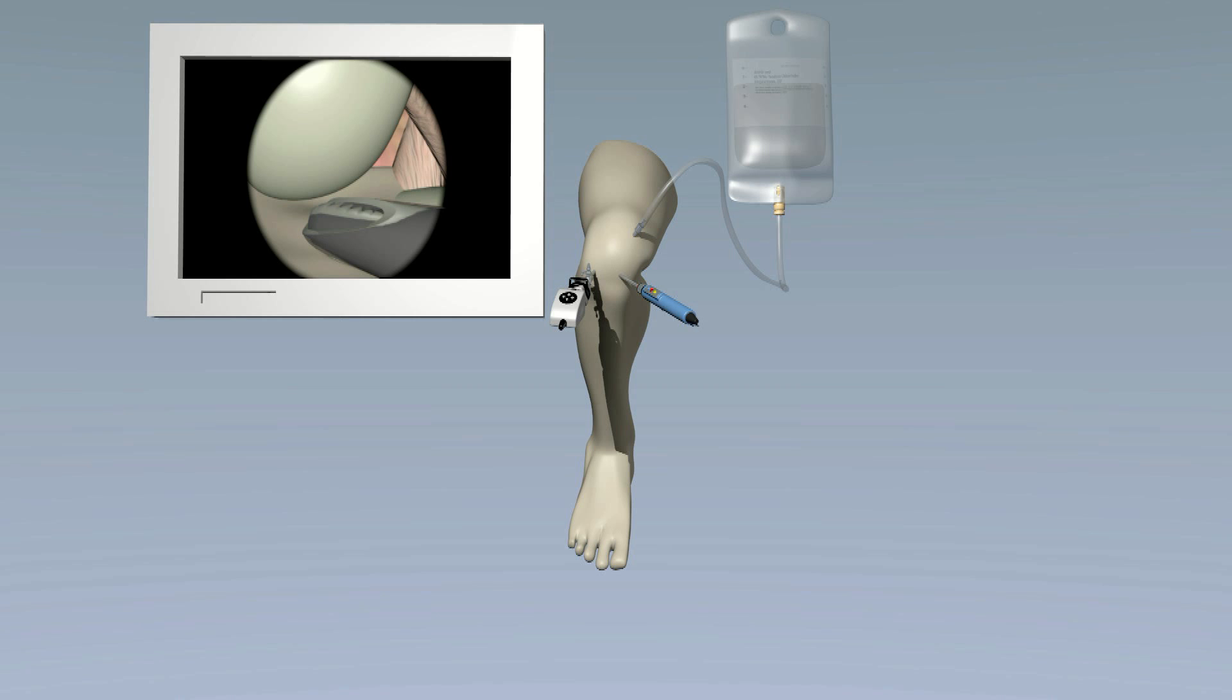A small metal probe is often used to examine different structures within the knee. A grasper can be used to grasp debris that is floating in the knee such as small pieces of loose cartilage.